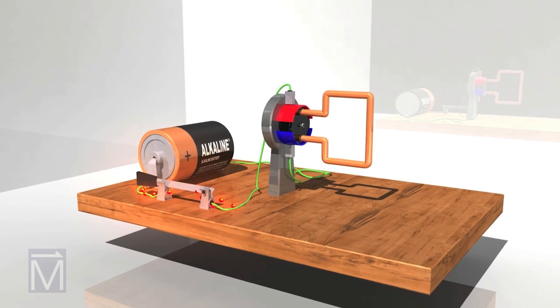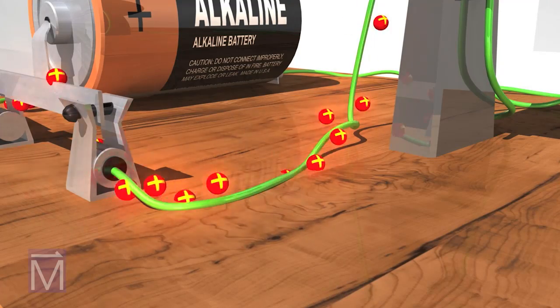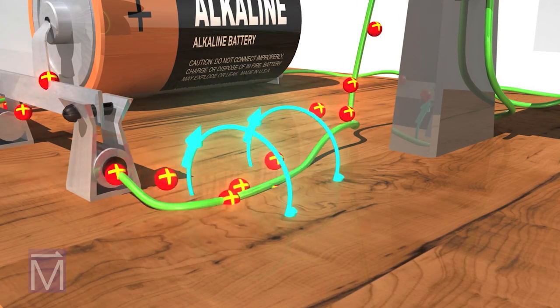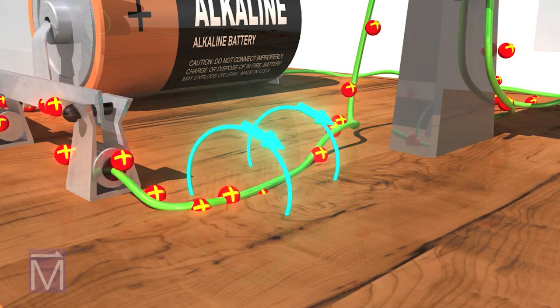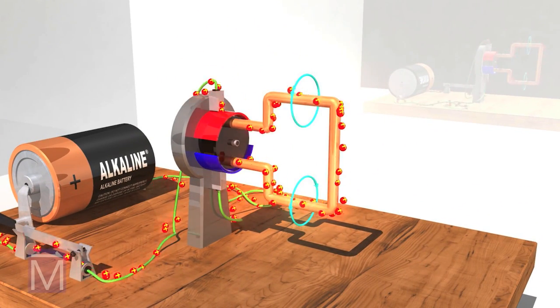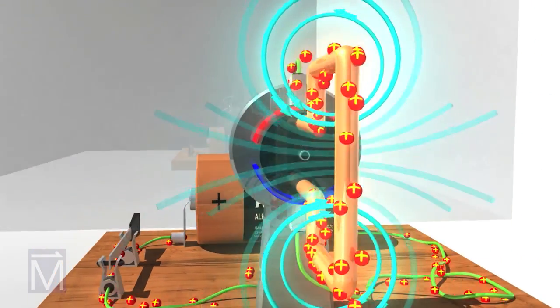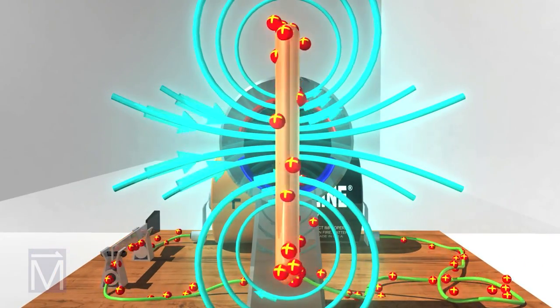The charged particles in the electrical current create a magnetic field around them as they move, as shown by these blue arrows. Because the copper coil, that is the armature, is part of the circuit, the current also creates a magnetic field around the coil. By passing current through this coil, we've turned it into an electromagnet.